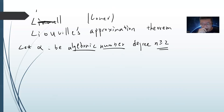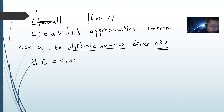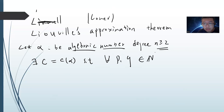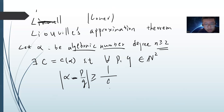Then there exists a constant c depending on alpha such that for any integers p, q, we have |α - p/q| ≥ c/q^n. This is an interesting result — it is like the other side of the Dirichlet theorem.